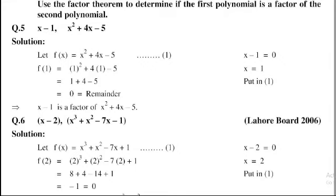So equation 1 becomes f(1) equals (1)² plus 4 into 1 minus 5. 1² equals 1 plus 4 times 1 is 4 minus 5. 4 plus 1 is 5, 5 minus 5 is equal to 0. So remainder is equal to 0. Hence x minus 1 is a factor of x² plus 4x minus 5.